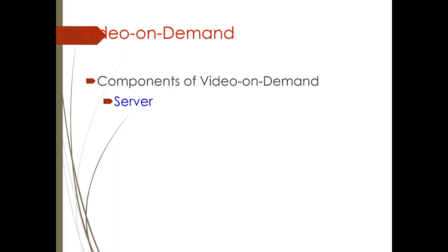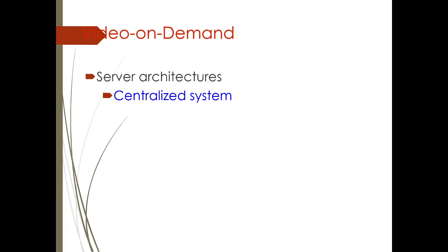The server should have short seek time, be reliable, and be scalable. Regarding architecture, a centralized system is easy to manage — the server and archive are stored in a central location. However, it does not scale well and has low throughput. A local server with a video buffer can be added; it holds no archive itself but can forward requests to the central server, which then delivers the required video to the local server.